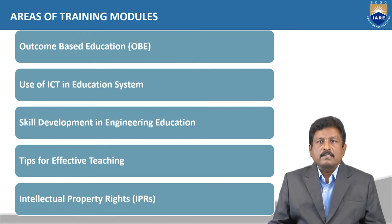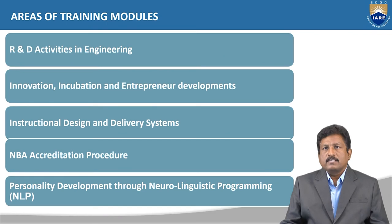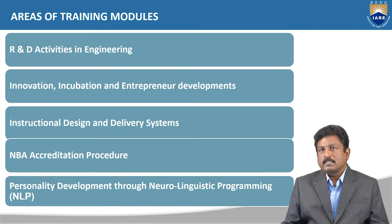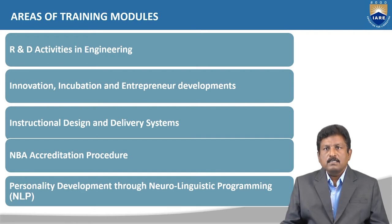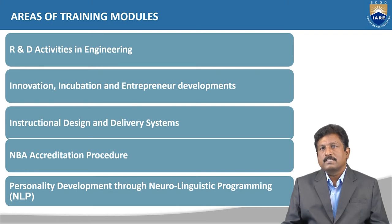The fourth module is tips for effective teaching. The fifth is Intellectual Property Rights, that is IPRs, and R&D activities in engineering — how to conduct research and development activities in engineering education. The sixth is innovation, incubation, and entrepreneurship development — where innovative ideas can be transformed into products with the help of incubation centers and facilities provided by the entrepreneurship development cell.